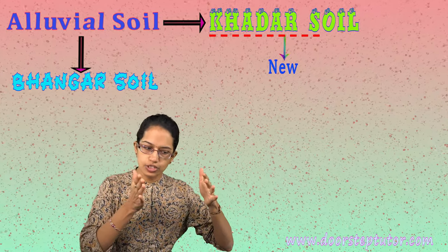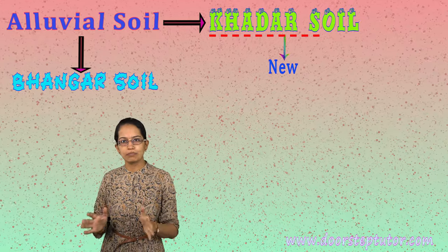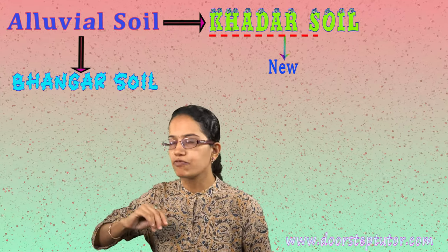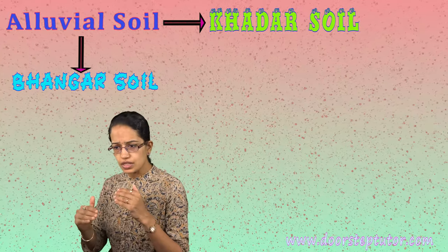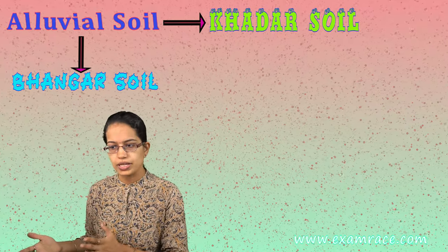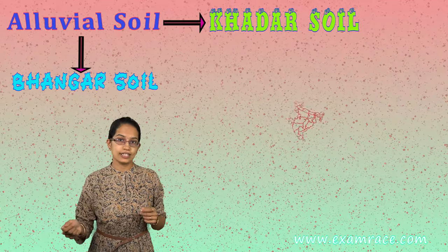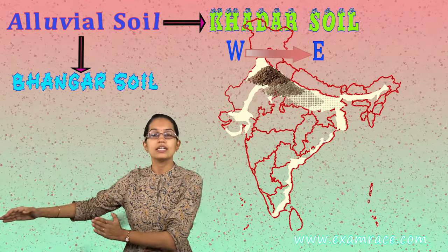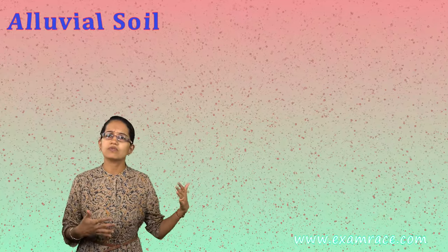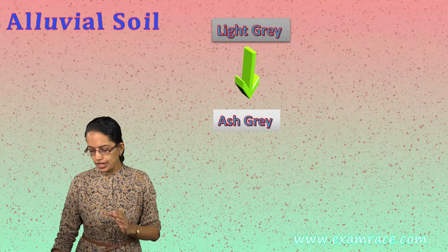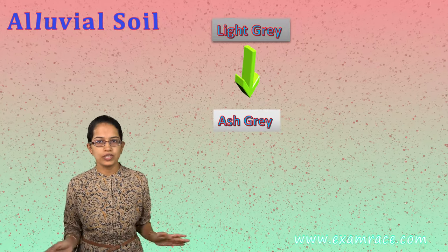Khadar is a new soil formed by flood deposits that occur year after year, with fine sand being deposited. Most of these soils are clay to loamy in nature, and the sand content is very important. As you move from the west towards the east, the proportion of sand consistently decreases. The color varies from light gray to an ash-colored soil, and there are various shades and textures of alluvial soil.